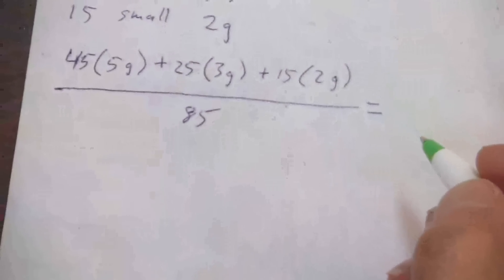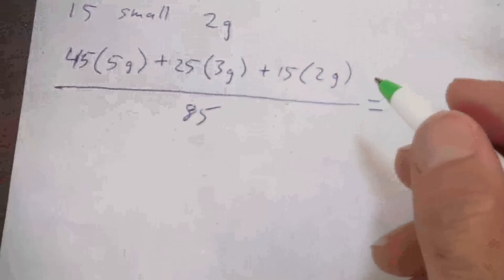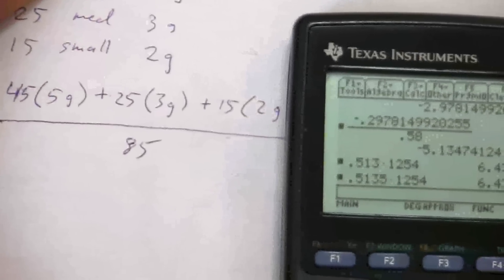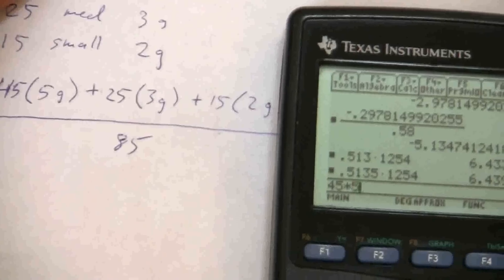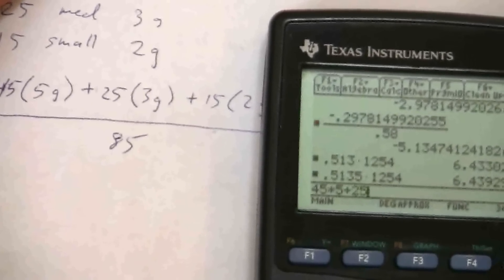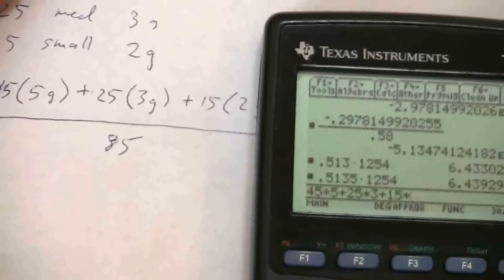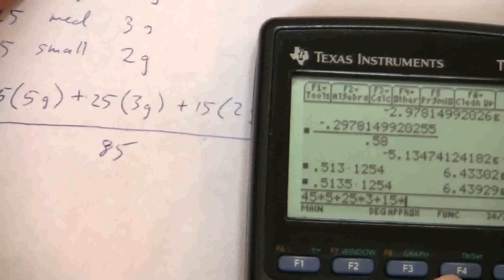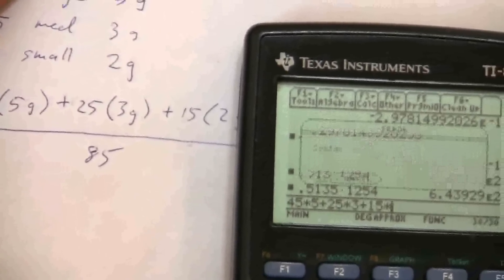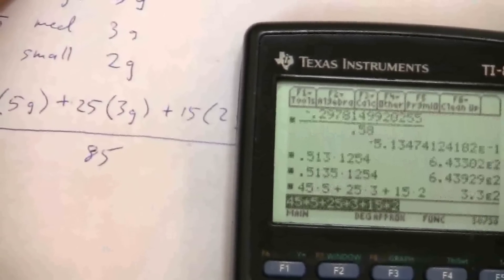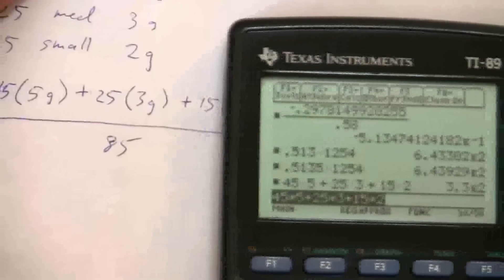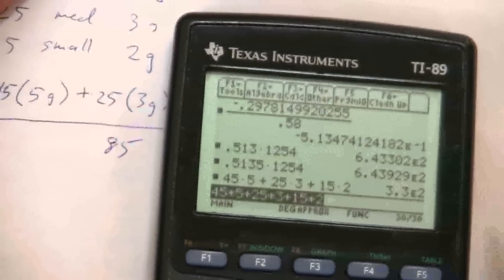And so, in the end, my average weight is, I'll do this one on the calculator. We have 45 times 5 plus 25 times 3 plus 15 times 2. And we get 330.